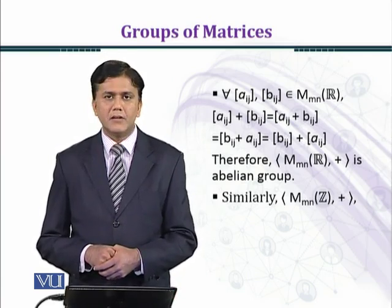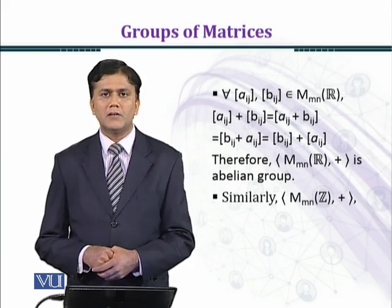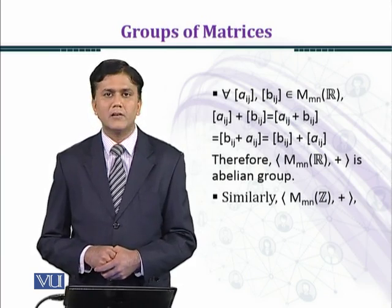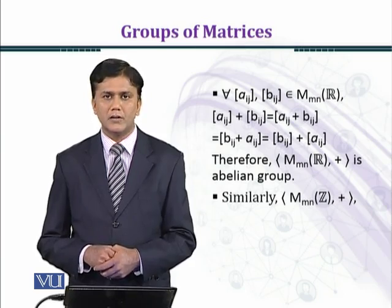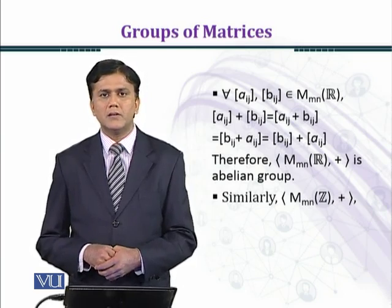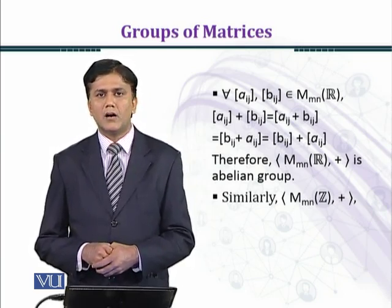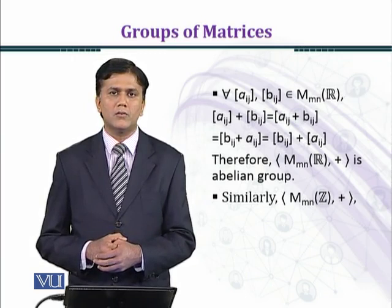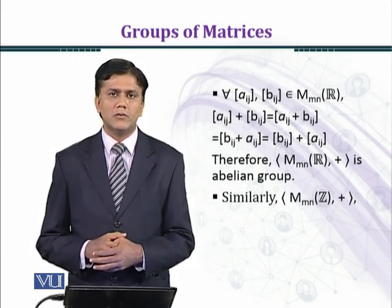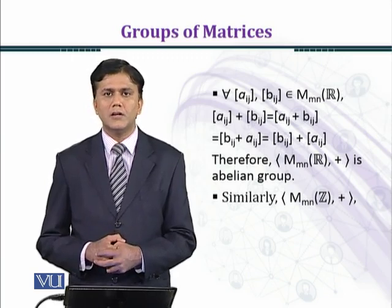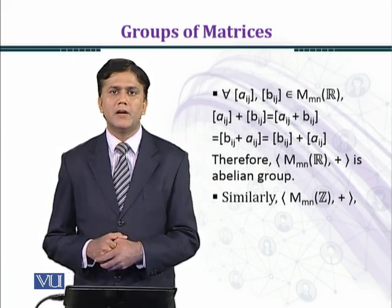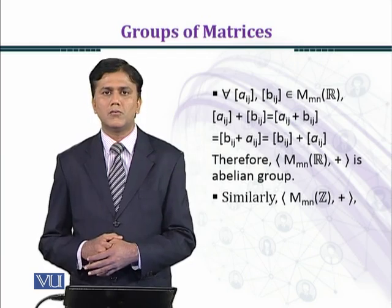Let M_{m,n}(Z) be the set of all matrices of order m by n with integer entries. This set is a group under addition and also a commutative group, since integers satisfy the commutative and associative properties under addition. Zero is the additive identity in the set of integers, and the additive inverse of [a_ij] is [-a_ij], which also belongs to Z.